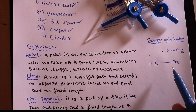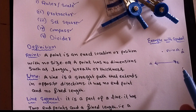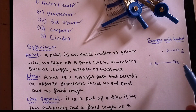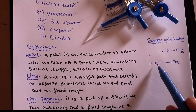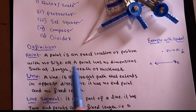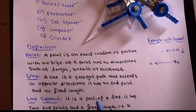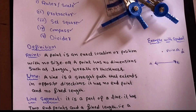A line cannot be bent - it must be straight, going in the same direction. If there is any bend in it, it is no longer a line. A line has no boundaries. The arrow symbol indicates that it continues in that direction infinitely. So a line is a straight path that extends in opposite directions with no endpoints and no fixed length.